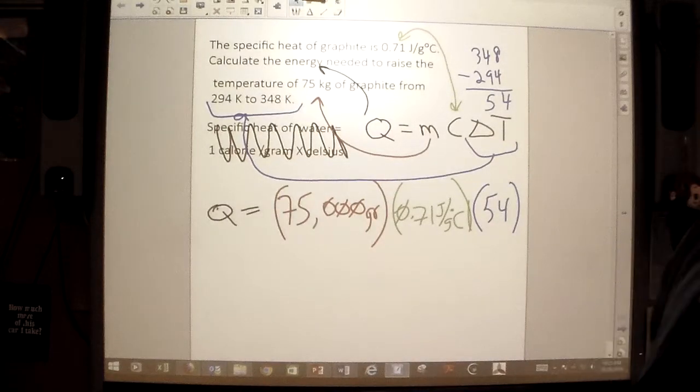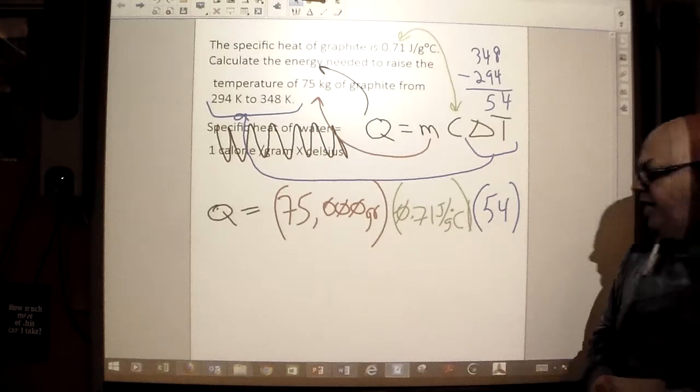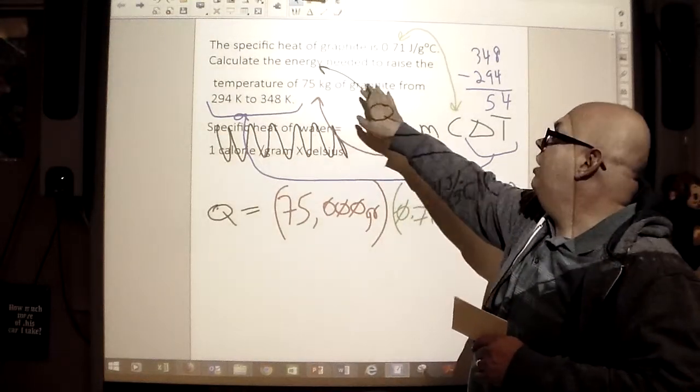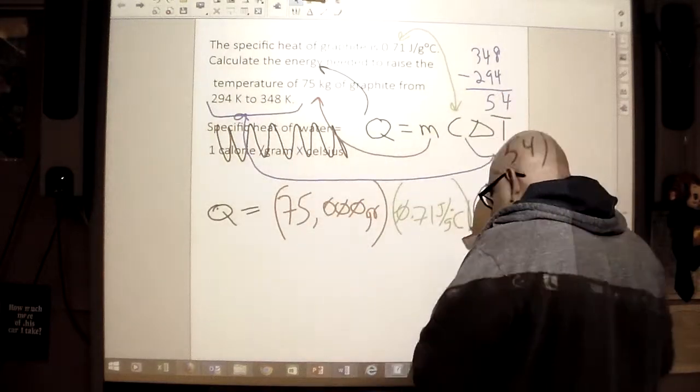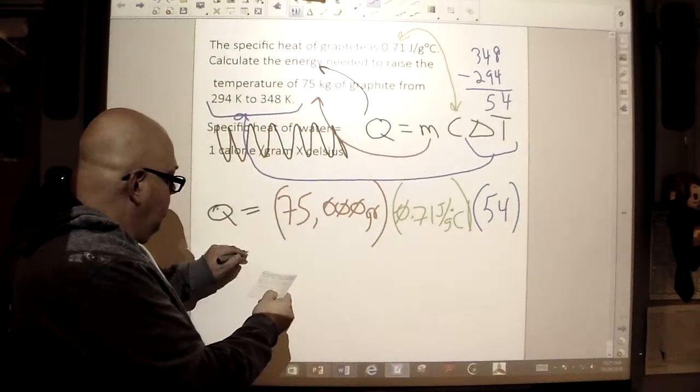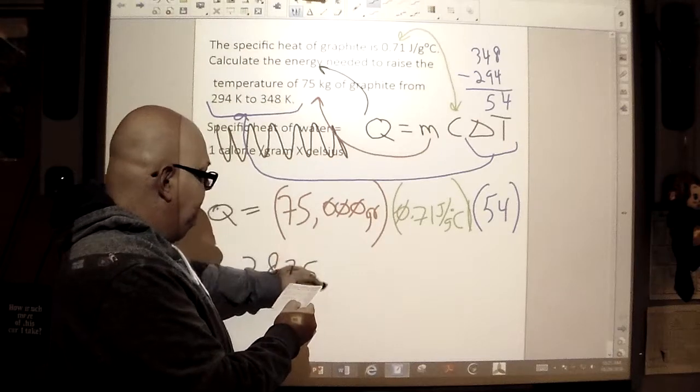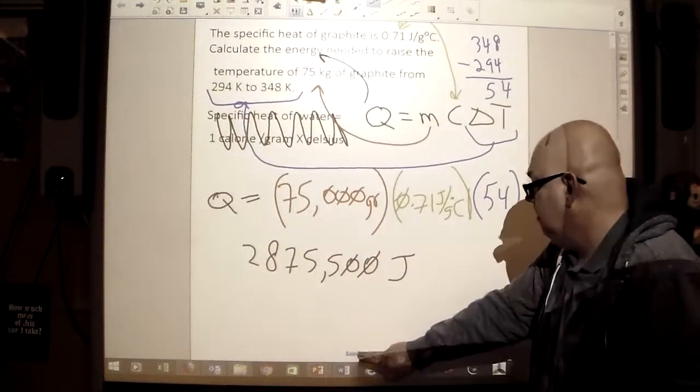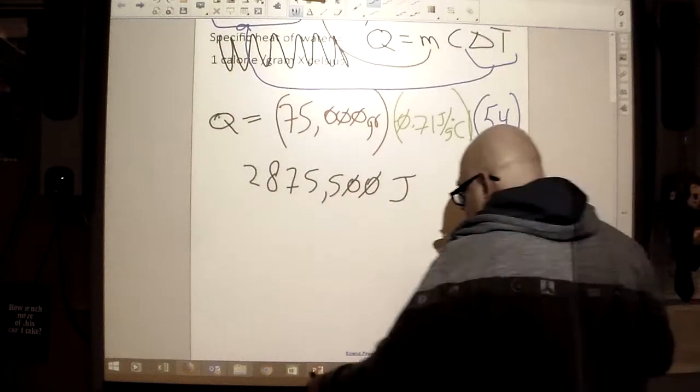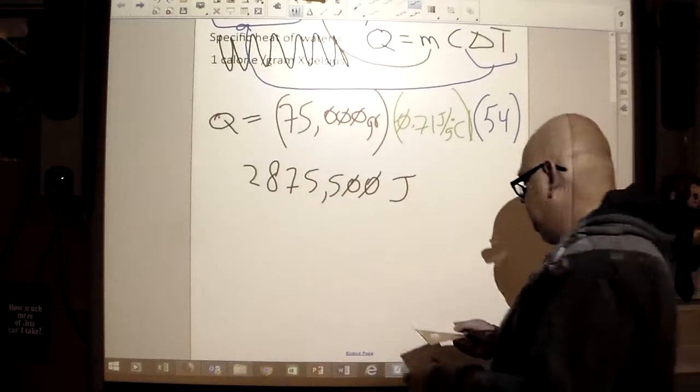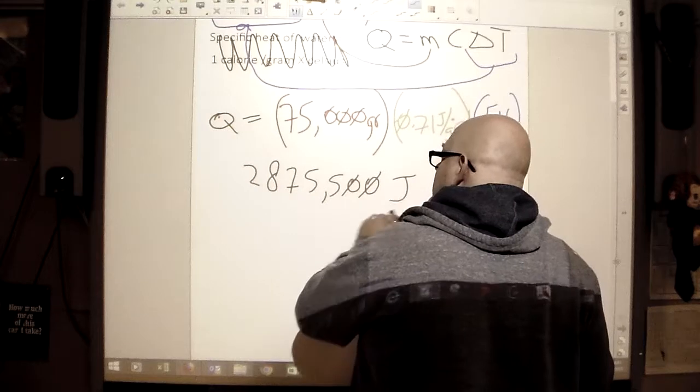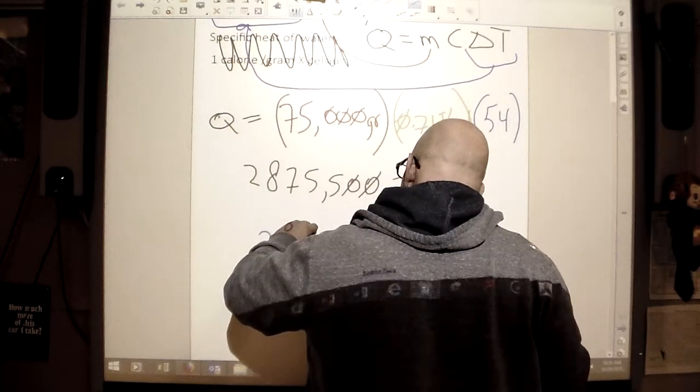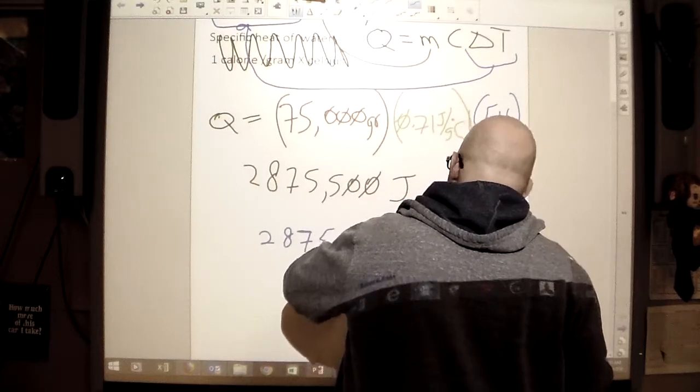So we have all those numbers put in, and we're going to go ahead and we're going to multiply that out, and that's going to tell us how many joules of energy is needed to raise the temperature of 75 kilograms of graphite from 294 K to 348. So when we calculate it, we can go ahead and it's 2,875,500 joules. That's the total amount of energy that we're going to need in order to raise that.